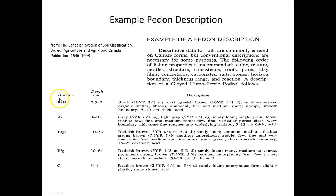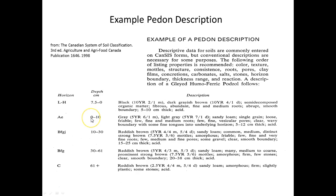Here's what that looks like in a different soil pit using the same convention. The top horizon is an organic horizon like LFH — you would write 7.5 to 0 for depth. The A horizon starts at the top of the mineral, so 0 to 10. You have a couple of B horizons in this case, and C is 61 plus in depth.